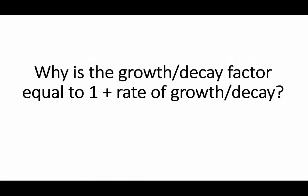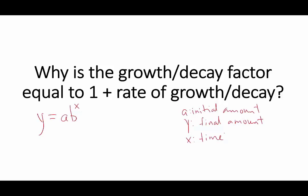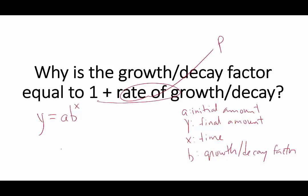One question that many students ask is: why is the growth or decay factor in an exponential equation equal to 1 plus the rate of growth or decay? Say you have an equation of this form, where a is the initial amount, y is the final amount, x is the unit of time measured usually in years, and b is the growth or decay factor. If we call the rate of growth p, why is b equal to 1 plus p?